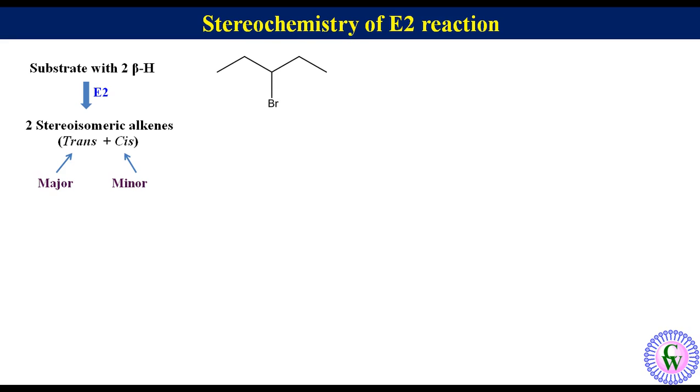For example, when 3-bromopentane is allowed to react with sodium ethoxide, a mixture of trans-2-pentene and cis-2-pentene is obtained where trans isomer is major and cis isomer is minor. Now, let's see how it happens.